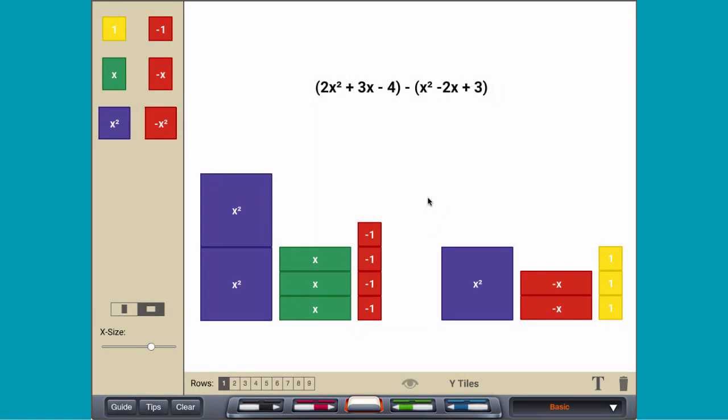To subtract polynomials like 2x squared plus 3x minus 4 minus x squared minus 2x plus 3, add the inverse of the second polynomial to the first polynomial.